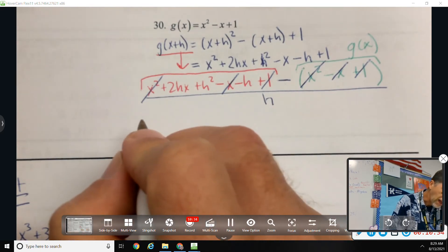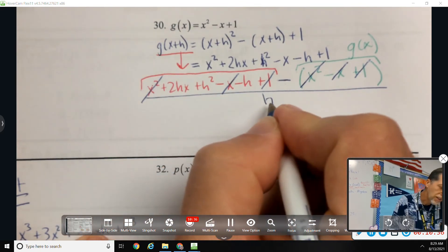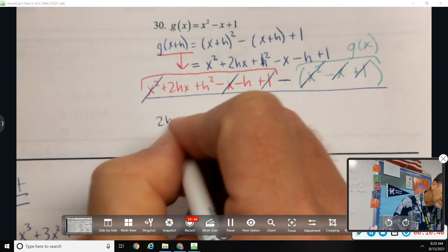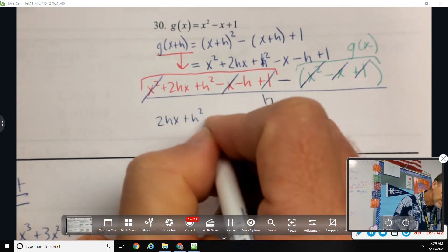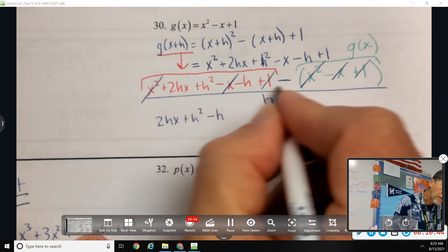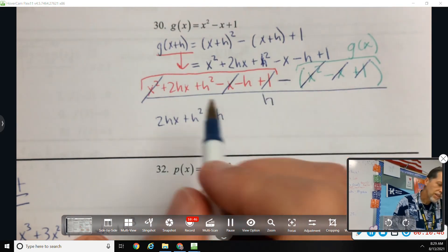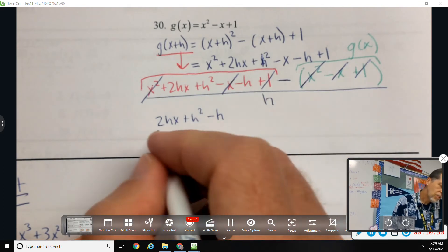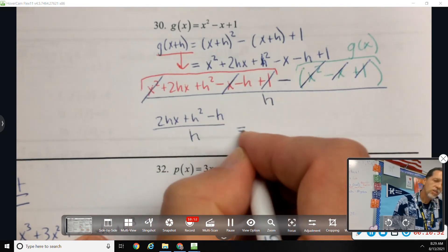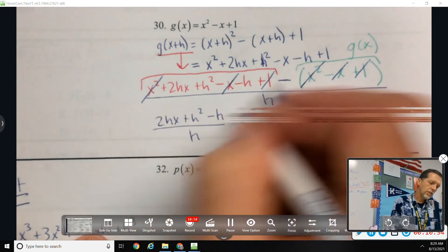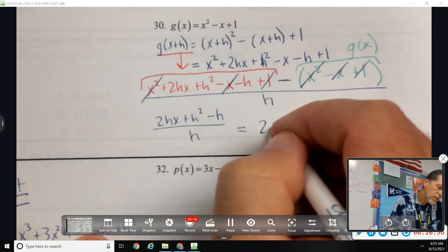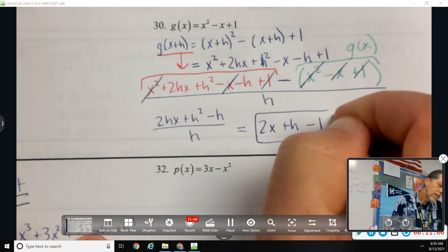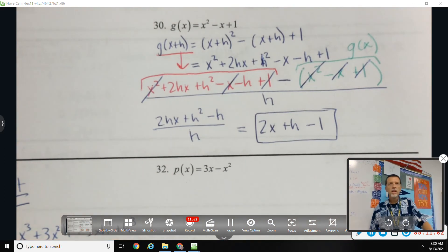I guess if you were really brave and daring you could reduce by h's now, but I want to rewrite because I don't want to do too many things at once. So what's left is 2hx plus h squared minus h, all over h. And then I can reduce by h, so 2x plus h minus one.